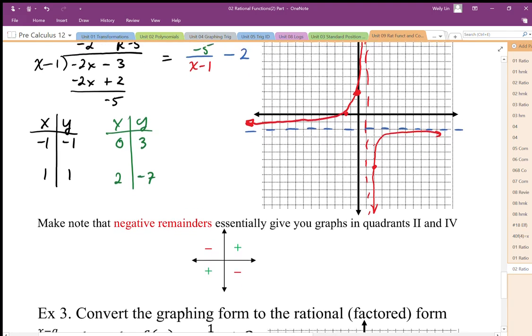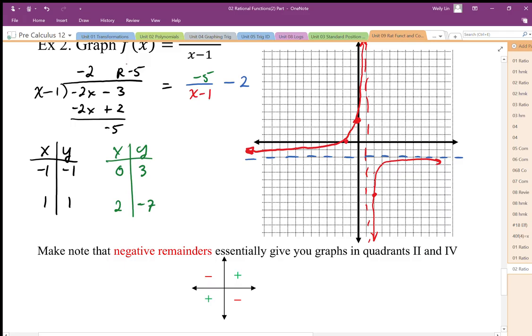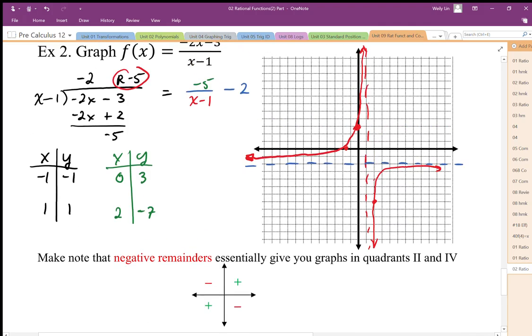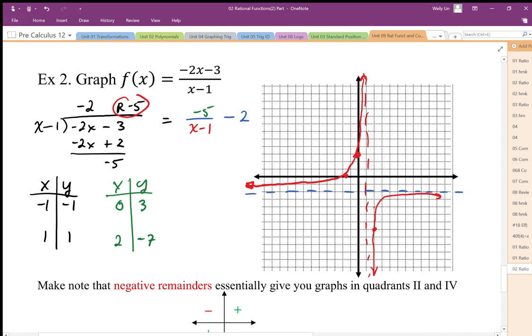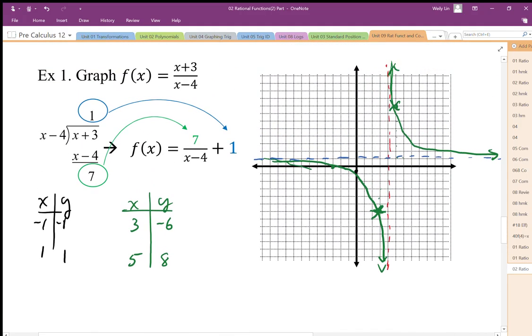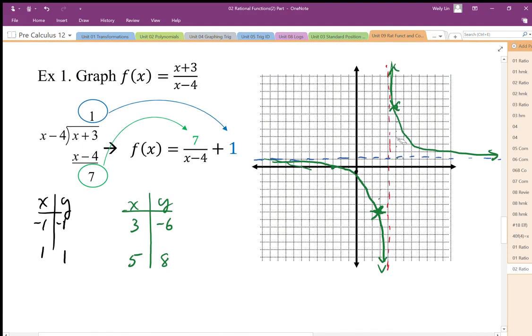One thing to note is that when I have a negative remainder, we end up going across this negative diagonal. If I have a positive remainder I usually end up across this diagonal. So notice that this one here had a negative remainder so we ended up across this diagonal. This other one had a positive remainder and it ends up across this diagonal.